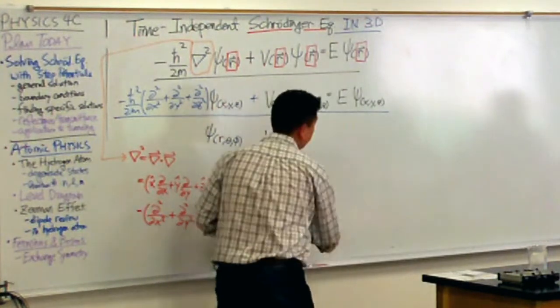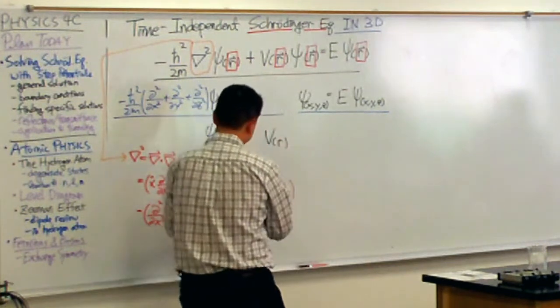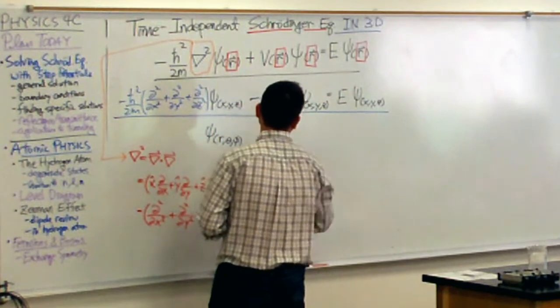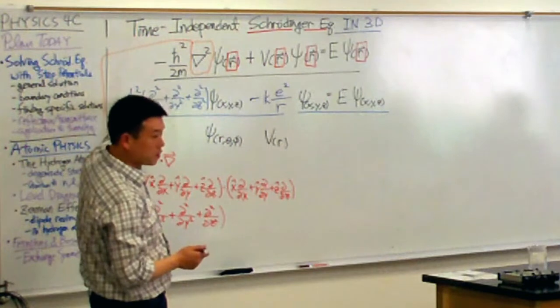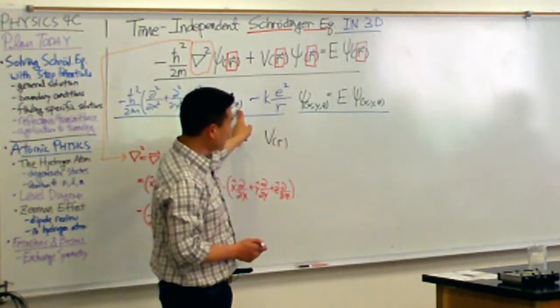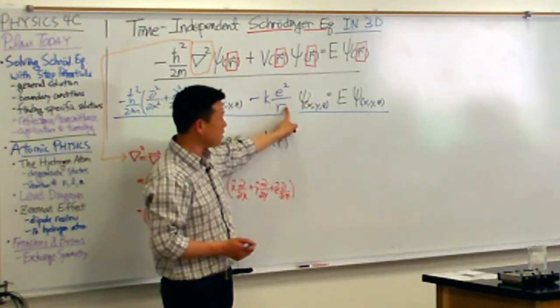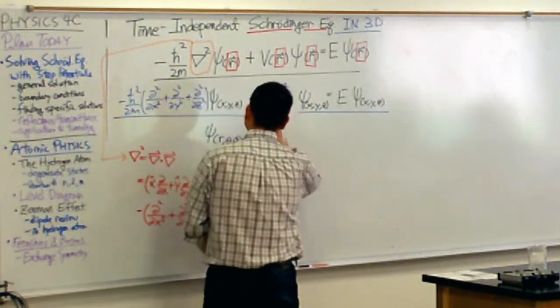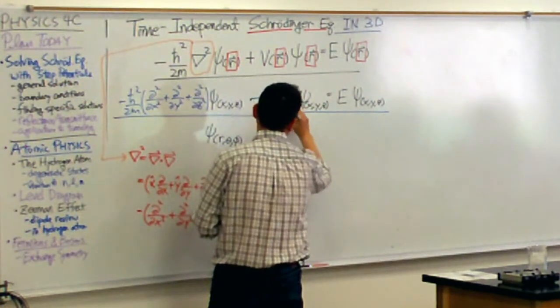So let me rewrite this potential in terms of that. Minus k e squared over r. But that's wrong. Because I'm writing this equation in terms of parameters x, y, z. Cartesian coordinate. I cannot just suddenly put in spherical coordinate variable. So I have to rewrite r in terms of my Cartesian variables. Meaning, this is square root of x squared plus y squared plus z squared.